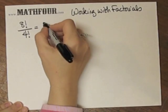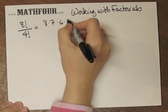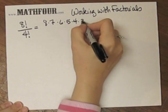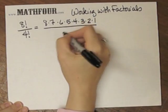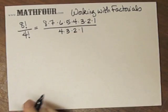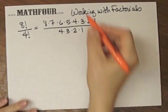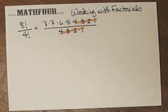So 8 factorial means 8 times 7 times 6 times 5 times 4 times 3 times 2 times 1, and 4 factorial means 4 times 3 times 2 times 1. Notice 4 times 3 times 2 times 1 is the same on the top and bottom, so I'm going to cancel those.